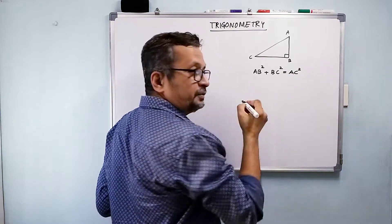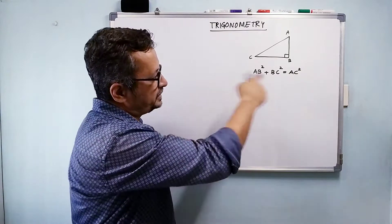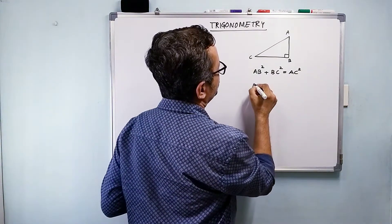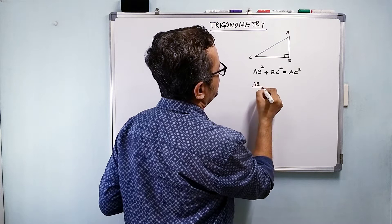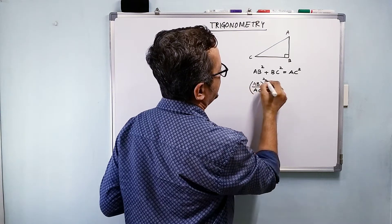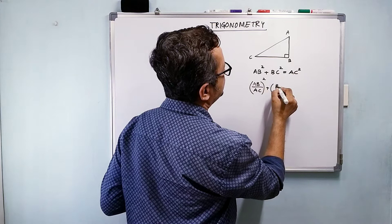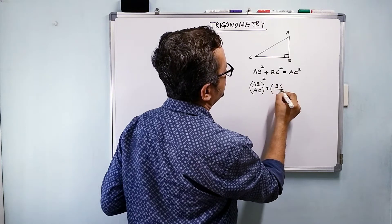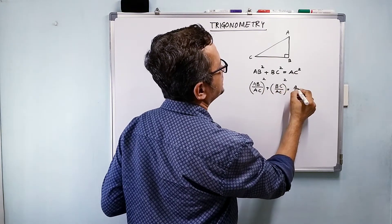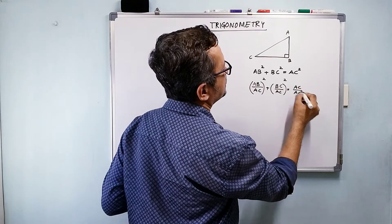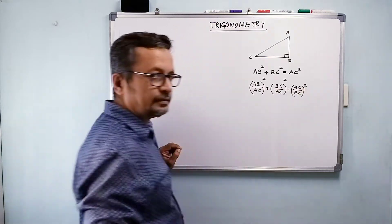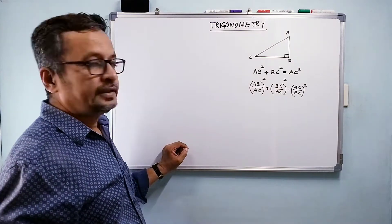Now, I am going to divide both sides of this equation by AC². So it is going to be (AB/AC)² plus (BC/AC)², and that is going to be equal to (AC/AC)².